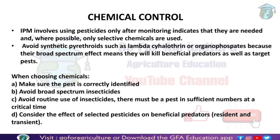Chemical control has a very small role in IPM — it is essentially a plan B. In IPM there are already many practices such as genetic, biological, cultural, and physical/mechanical controls that are sufficient to manage pests. If a farmer does use chemical control, it should be in a balanced or limited amount using pesticides.